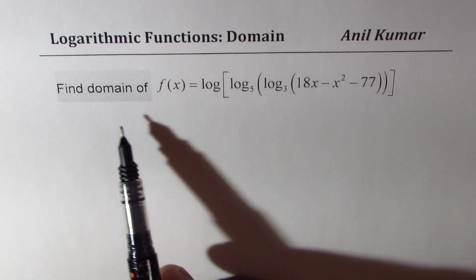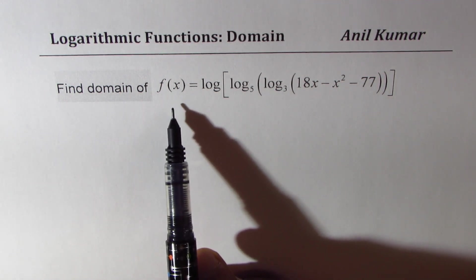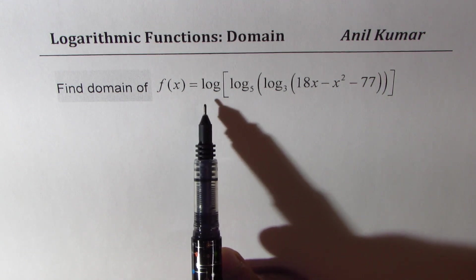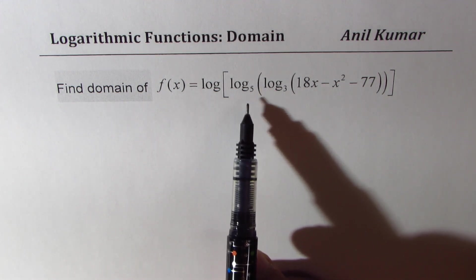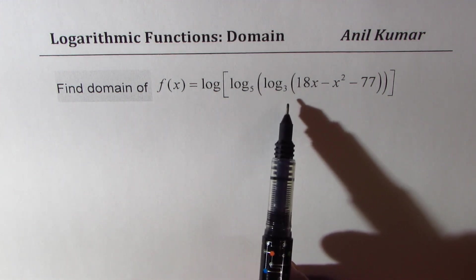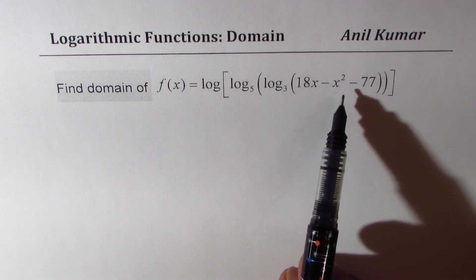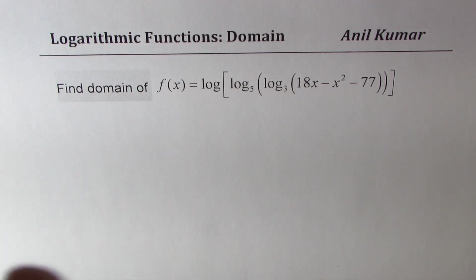In this video, we will learn how to find the domain of a complicated logarithmic function. As you can see here, we need to find the domain of f(x), which is equal to log of log base 5 of log base 3 of (18x - x² - 77). We have nested logarithms here.